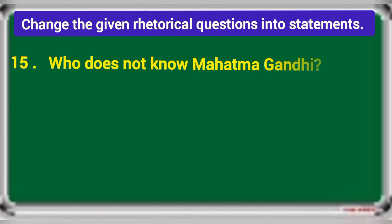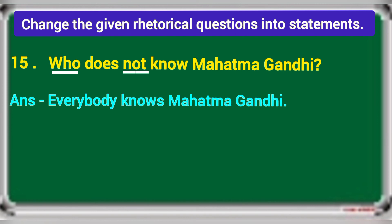Fifteenth: who does not know Mahatma Gandhi? If in a rhetorical question there is 'who' and 'not', in the statement use 'everybody'. Answer: everybody knows Mahatma Gandhi. Here 'everybody' is the subject, so there is an 's' after the verb. The question uses 'does', indicating simple present tense, so in the answer use 'knows'.